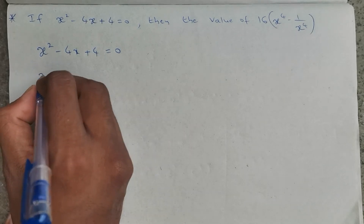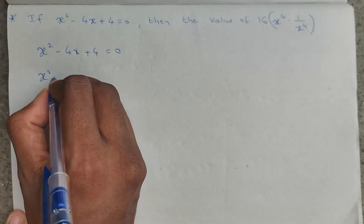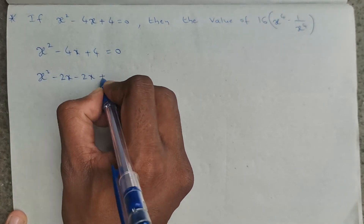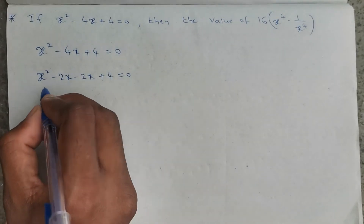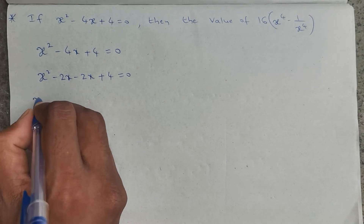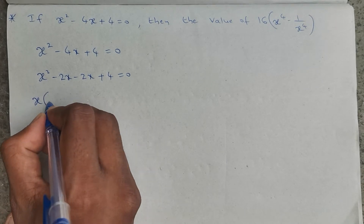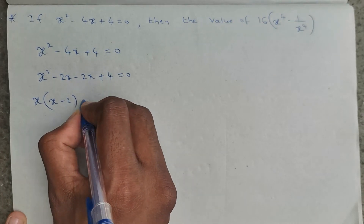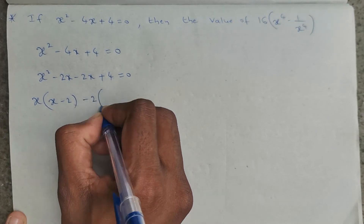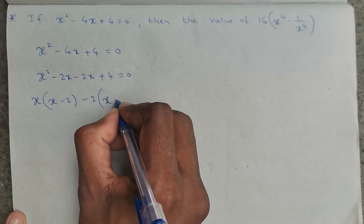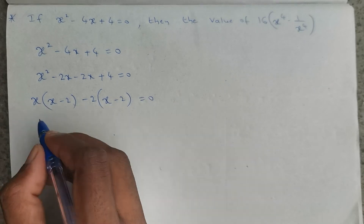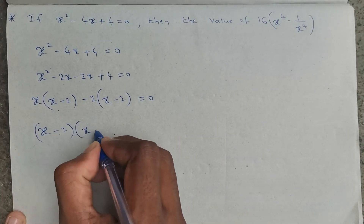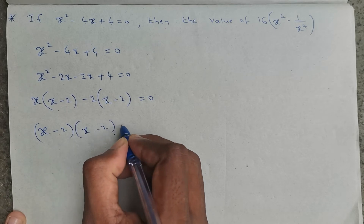x squared minus 4x can be written as minus 2x minus 2x plus 4 equals 0. From the first two terms, x is common, remaining with x minus 2. Again from the third and fourth terms, minus 2 is common, remaining with x minus 2 equals 0. So we get x minus 2 into x minus 2 equals 0.